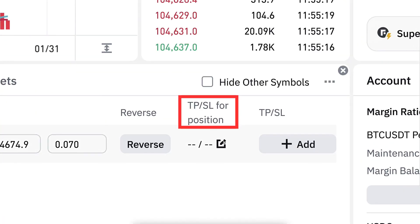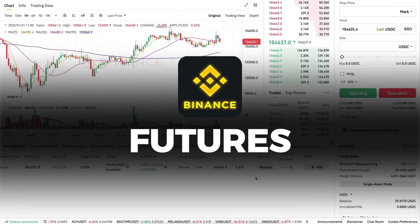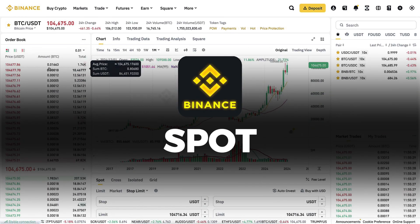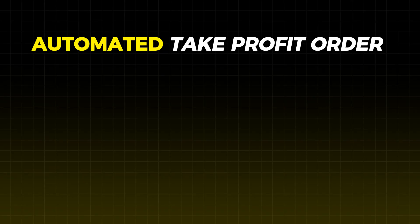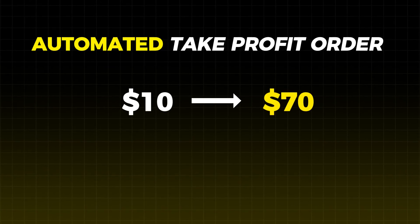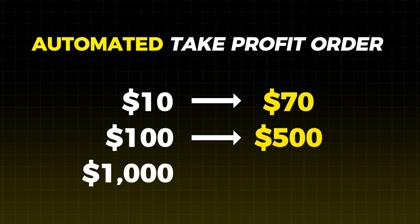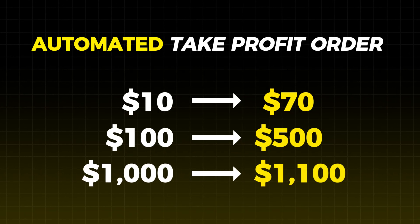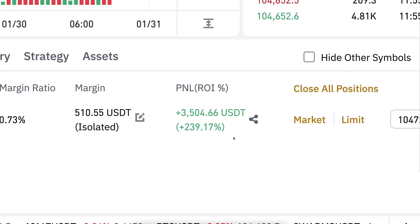You will learn how to use the take profit and stop loss on Binance Futures and on Binance Spot. For example, set an automated take profit order when you have turned 10 dollars into 70 dollars, 100 dollars into 500 dollars, 1000 dollars into 1100 dollars, or whatever you choose.